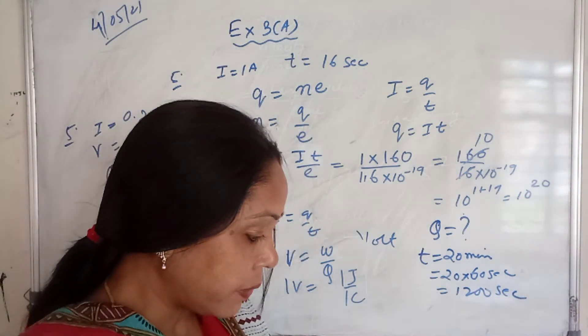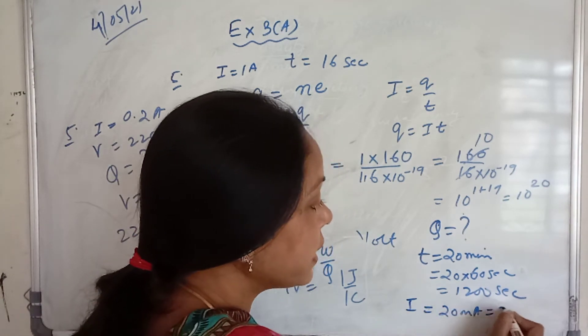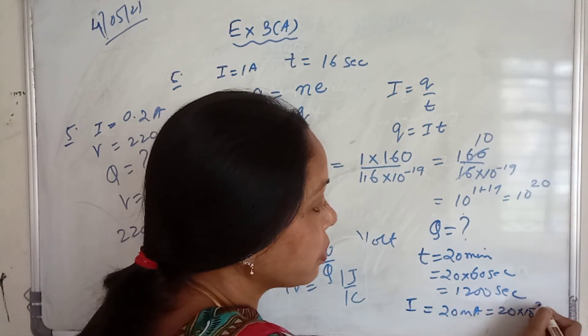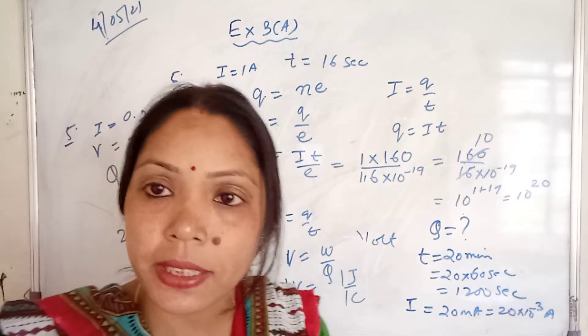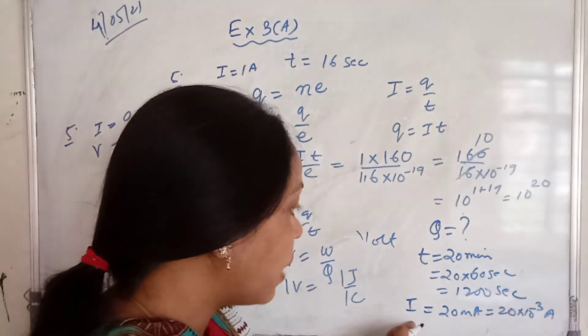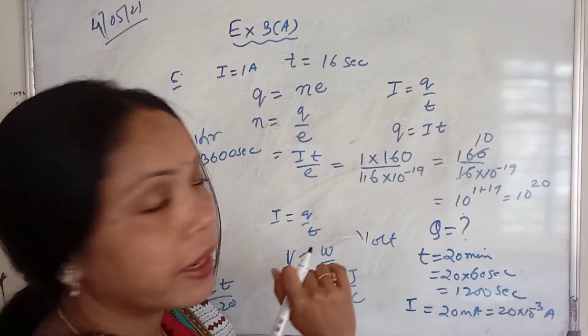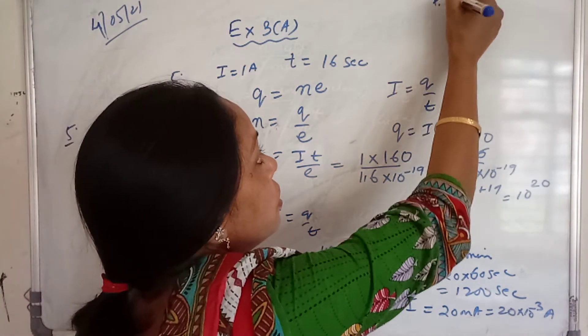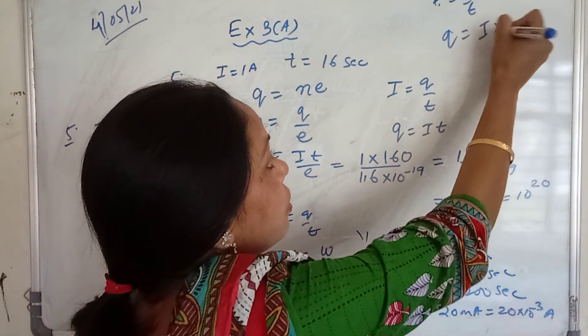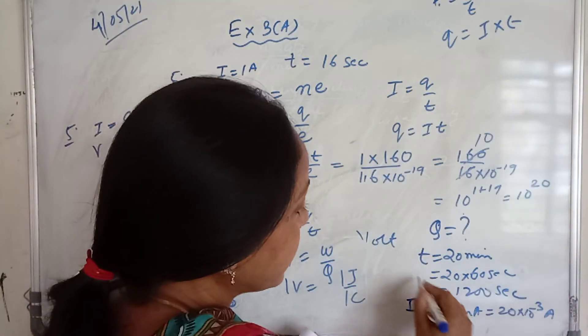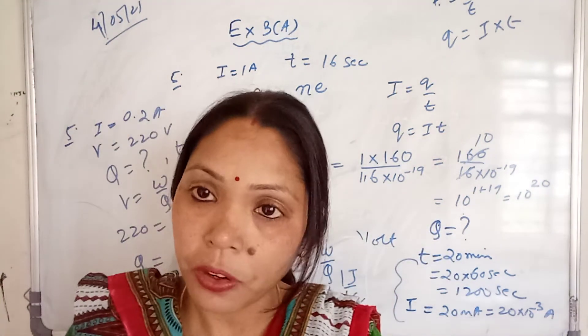Next is given: I equals 20 milliampere. 20 milliampere means 20 into 10 to the power minus 3 ampere. Milli means minus 3 ampere. So I equals 20 milliampere, T equals 1200. Now use this formula: I equals Q by T. It means Q equals I into T. Simply multiply this I and T. That one will be your answer for charge.